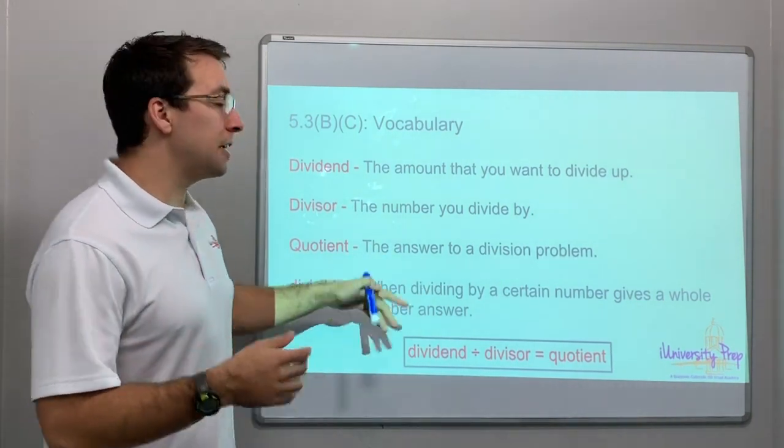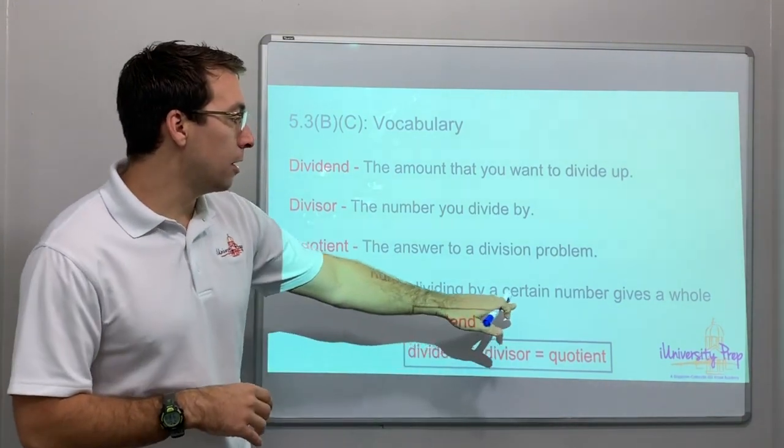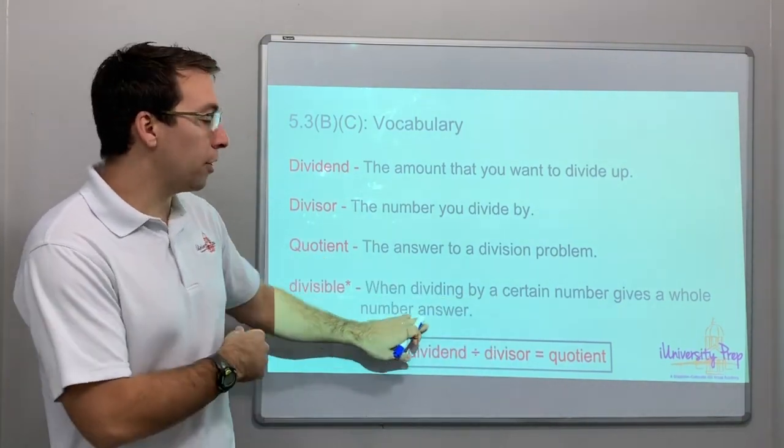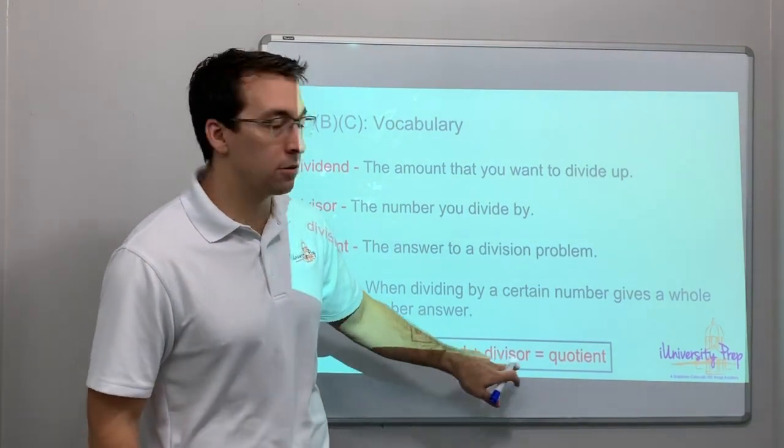And then if something is divisible, it's when you're dividing by a certain number, the answer gives a whole number answer. So the dividend divided by the divisor equals the quotient.